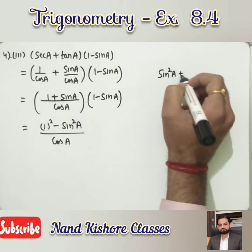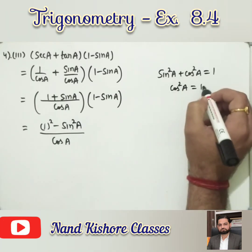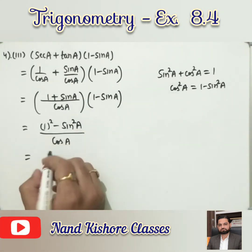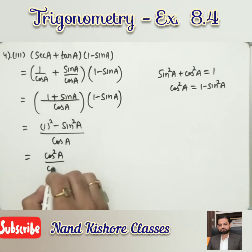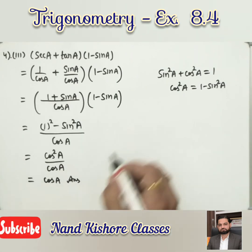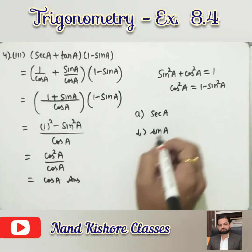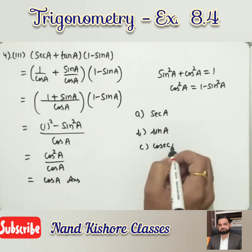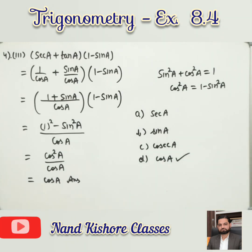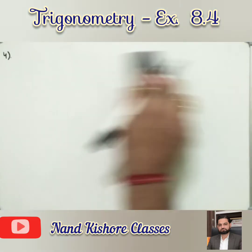So we get (1 − sin²A)/cosA. From sin²A + cos²A = 1, we get cos²A = 1 − sin²A. Therefore (1 − sin²A) = cos²A. So cos²A divided by cosA gives cosA. The four options are: (a) secA, (b) sinA, (c) cosecA, (d) cosA — so the answer is option (d) cosA.